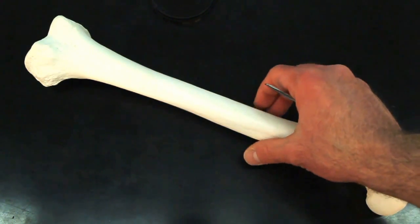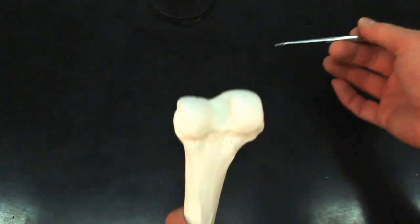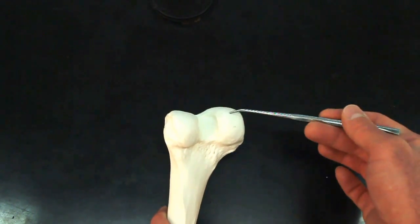Then we have our medial and lateral condyles. So we'll turn this over a little bit. This structure right here and here, the distal ends of the bone.